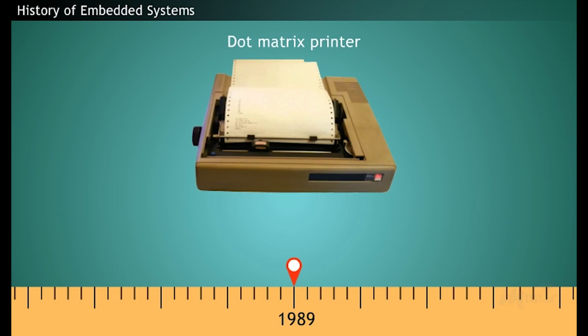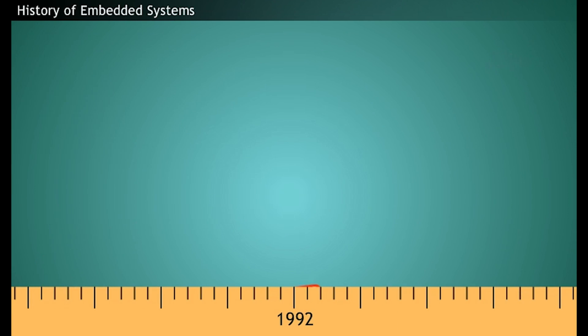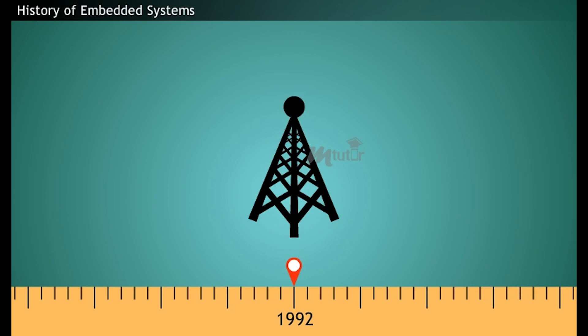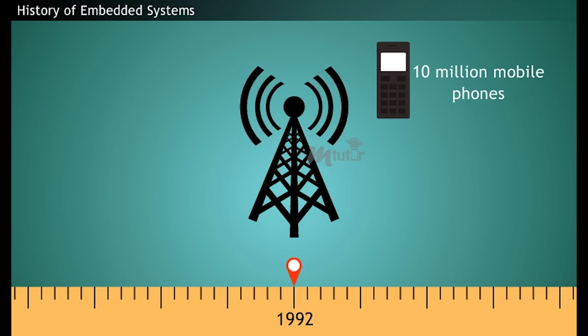In 1989, one of the embedded systems, Dot Matrix Printer, was restricted to 8-bit due to power expenses and tight timing and electrical constraints. In 1992, the embedded systems went wireless and nearly 10 million mobile phones were manufactured using embedded systems for controlling their functioning.